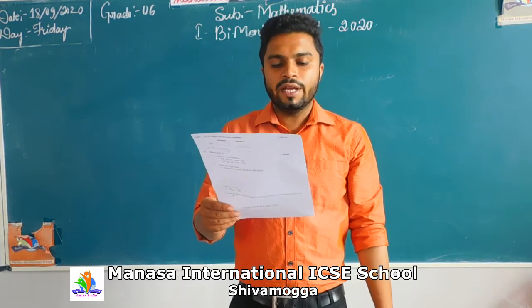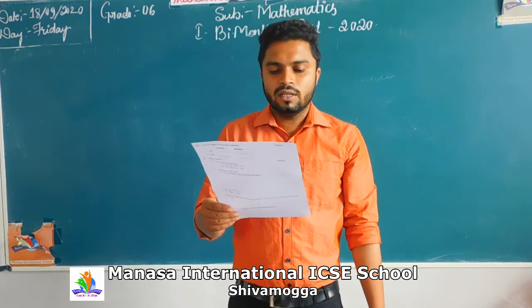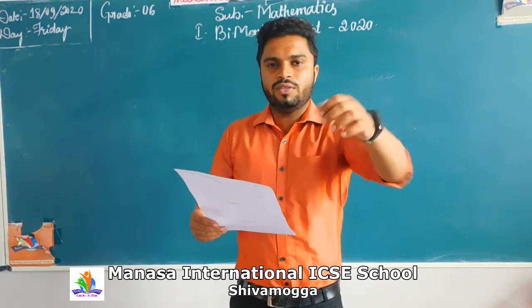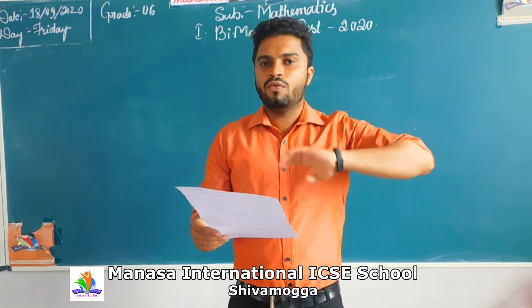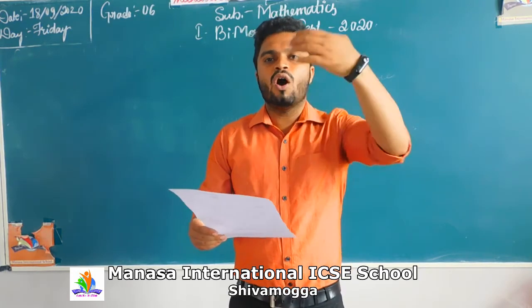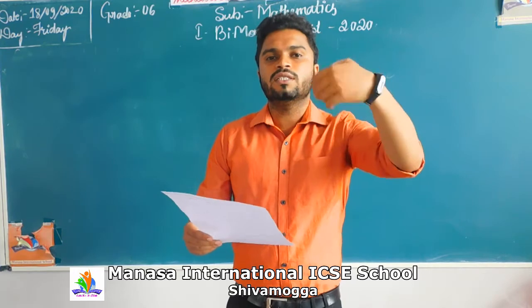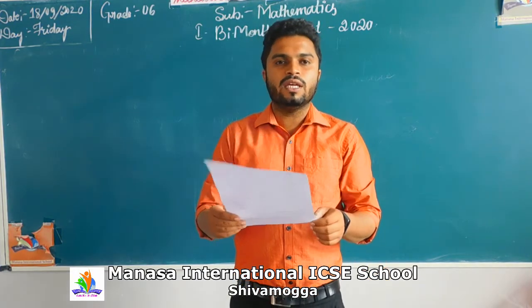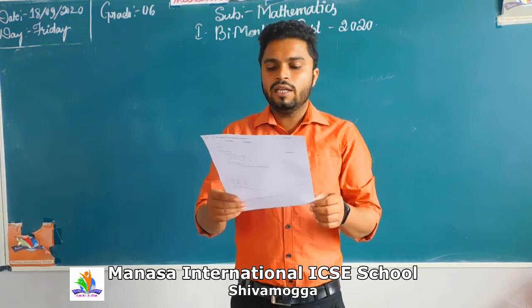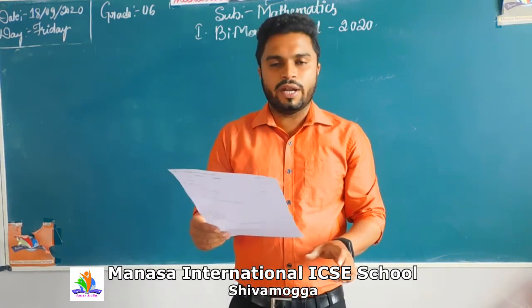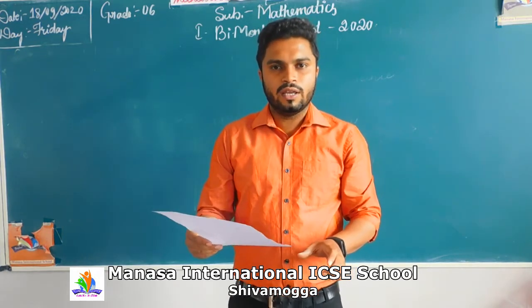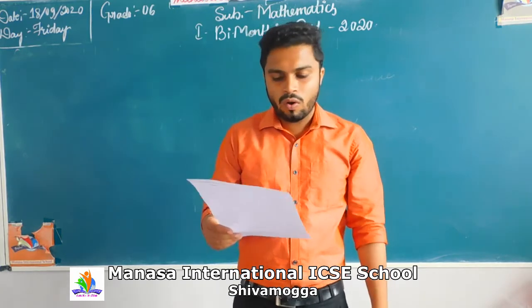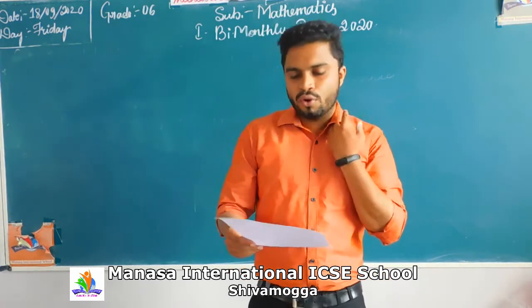Fifth heading: write the number that comes before and after. I have shown you — before means the previous number, after means the next number. Color the smallest number in yellow and the greatest number in red. You are going to color the smallest number in yellow and the greatest number in red.